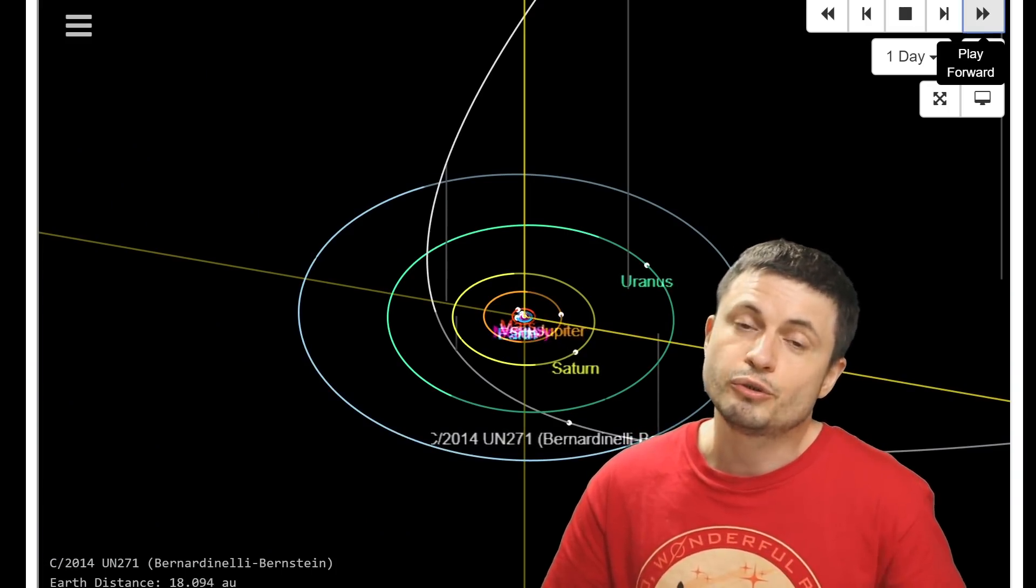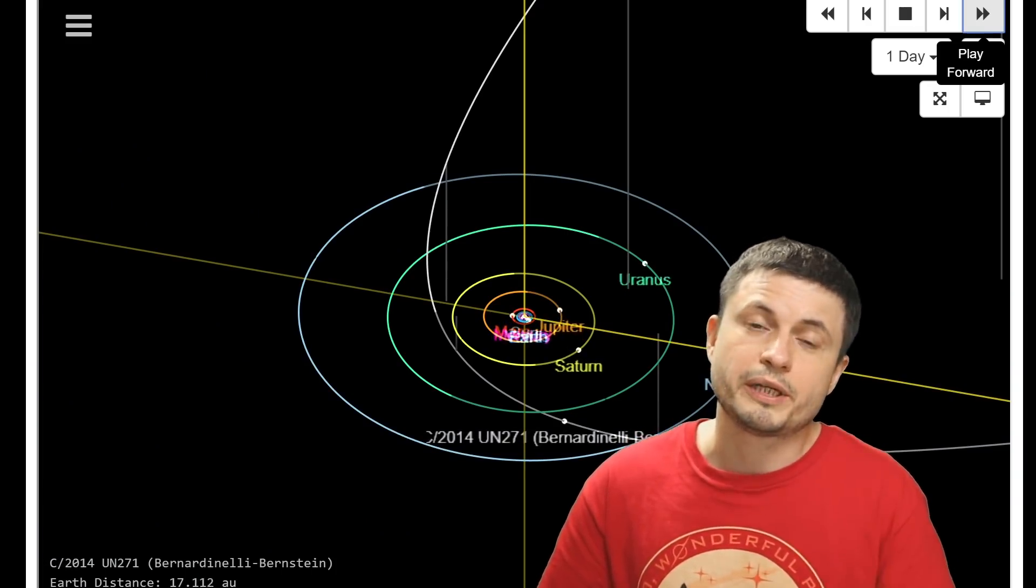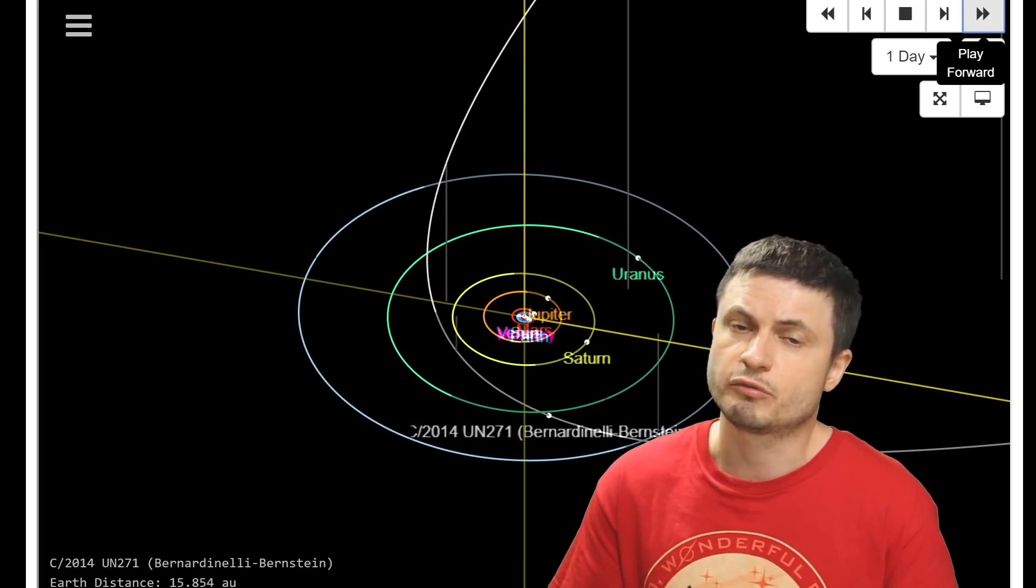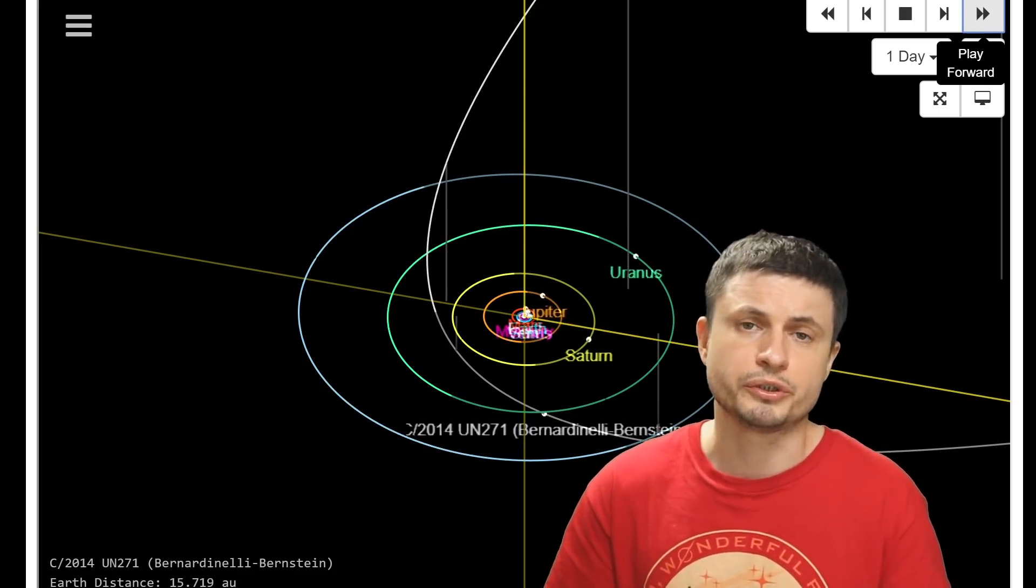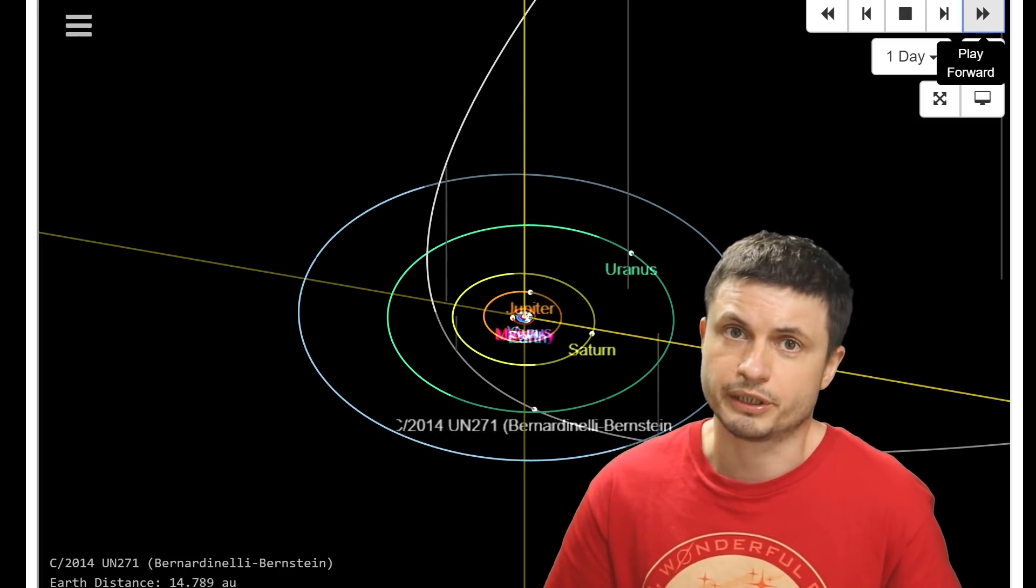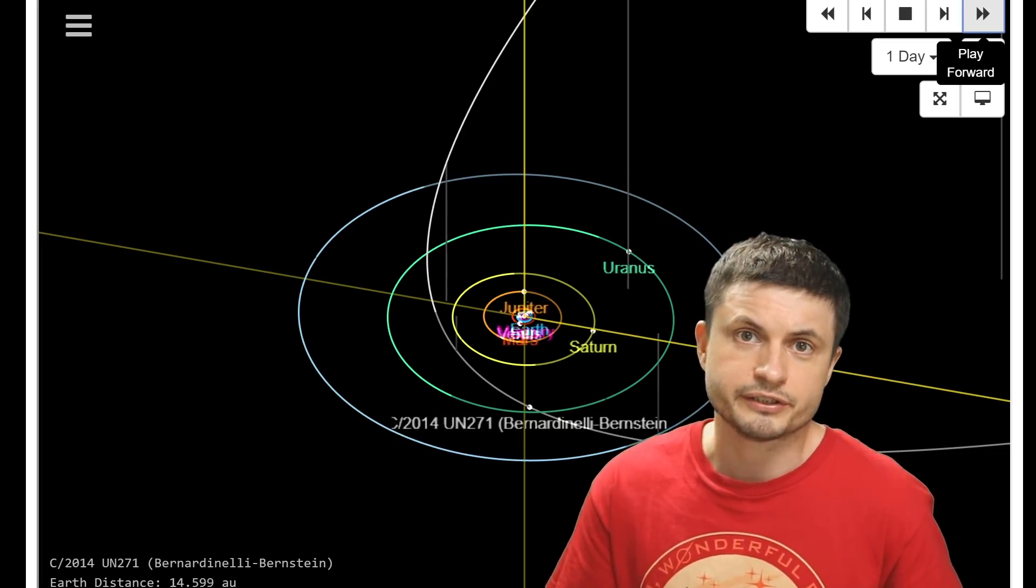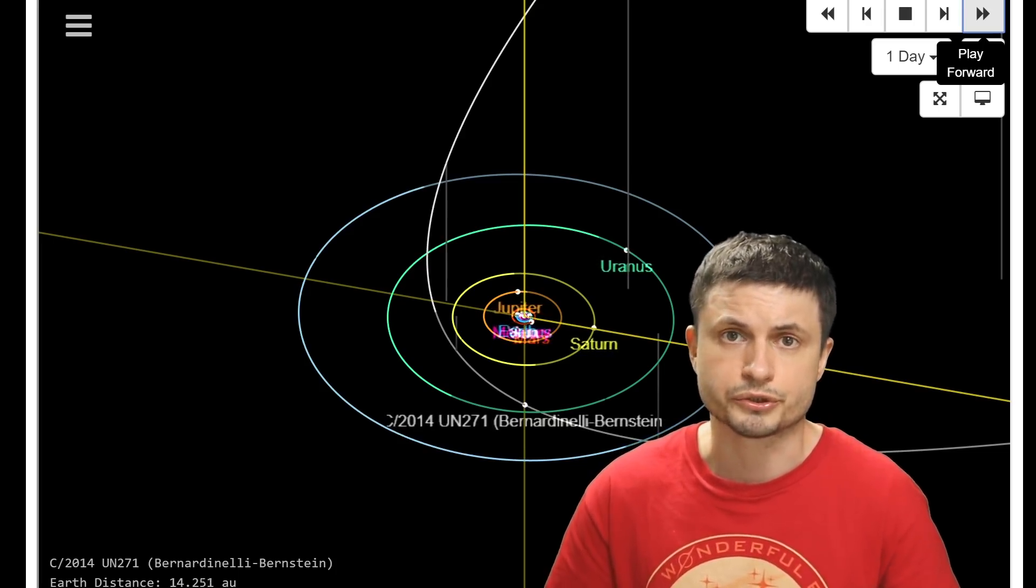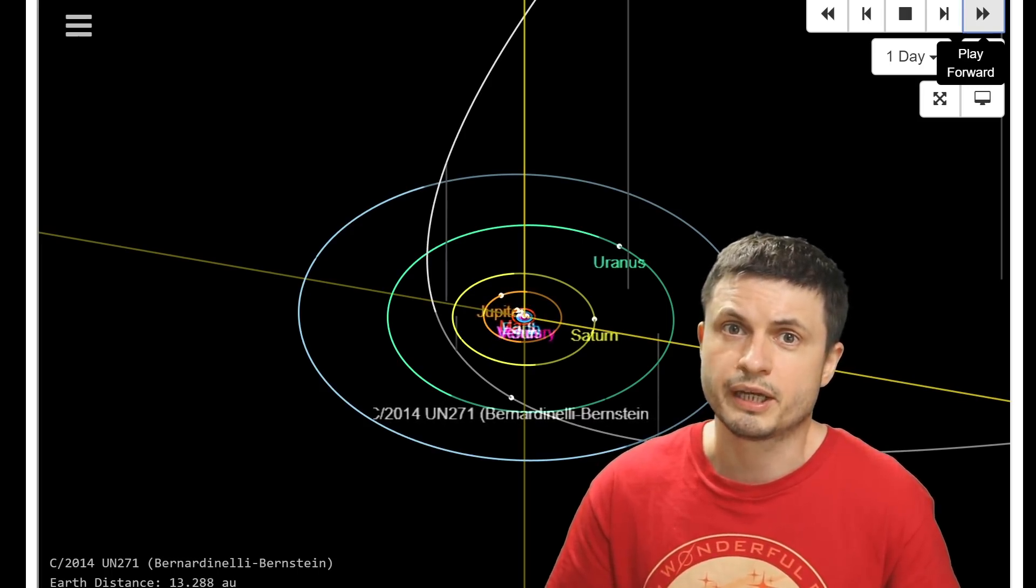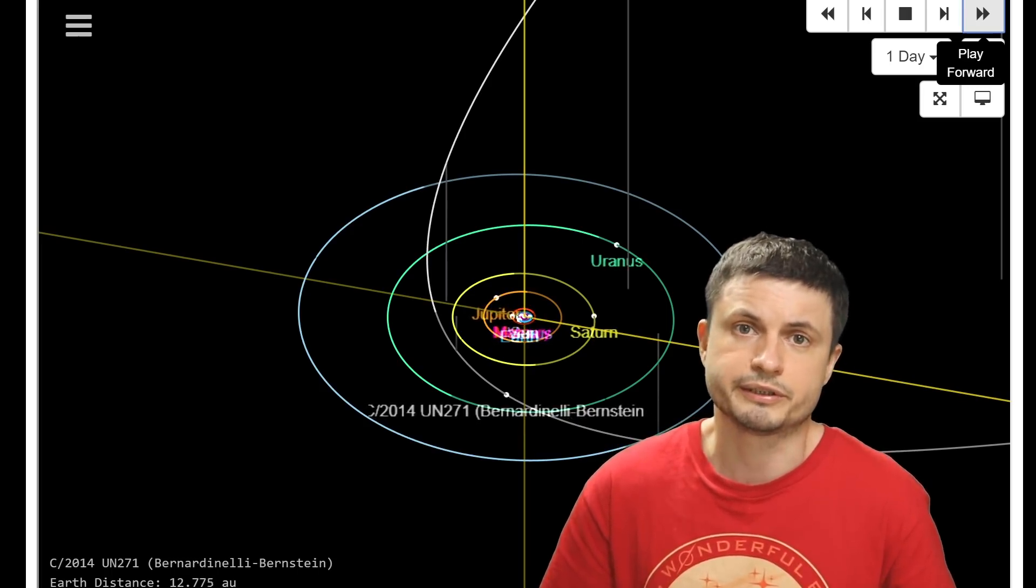And the thing is after 2031 it's going to once again go all the way to the farthest reaches of the solar system. And specifically at a distance of about 50,000 astronomical units away from the sun. And it might technically never really come back from there. We know that in the next few million years another star is going to come really close to the sun. And it might dislodge this object from its current orbit. Thus sending it to interstellar space.